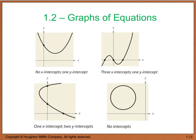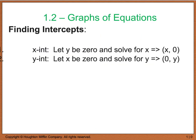Here are a few examples: a graph with no x-intercept but one y-intercept; a graph with three x-intercepts and one y-intercept; one with two y-intercepts and one x-intercept; and a circle with no x or y-intercepts. To find the x-intercept, set y equal to zero and solve for x — you get a point of the form (x, 0). For the y-intercept, set x equal to zero and solve for y — giving a point (0, y).